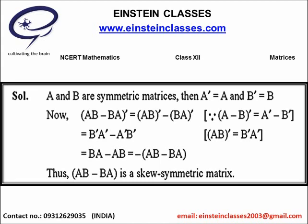Now it is given that A dash equals A because matrix A is symmetric, and similarly B dash equals B because matrix B is symmetric. Replace B dash A dash with BA and A dash B dash with AB. You get BA minus AB. Taking out the minus sign, you get minus of AB minus BA. Hence we have proved that the transpose of AB minus BA equals minus of AB minus BA, and therefore according to the definition of skew symmetric matrix, AB minus BA is a skew symmetric matrix.